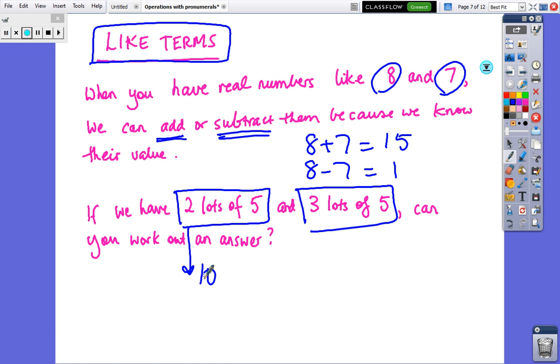2 lots of 5 is just 10, 3 lots of 5 is 15, so the answer must be just 25. If you look at 2 lots of 5 and 3 lots of 5, we have 5 lots of 5, and that also equals 25.